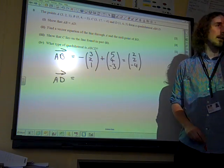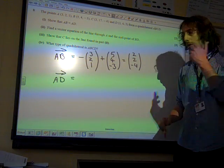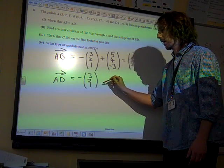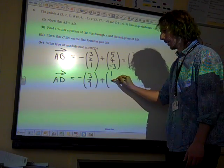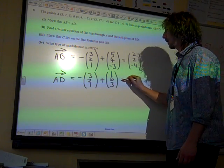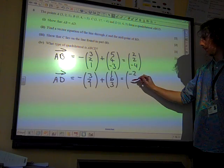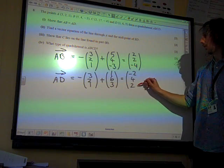And the vector AD, again, we're going to go from A to the origin, and then we're going to go from the origin to the point D, which is 1, 6, 3. And this time, this gives us minus 2, 4, and 2.